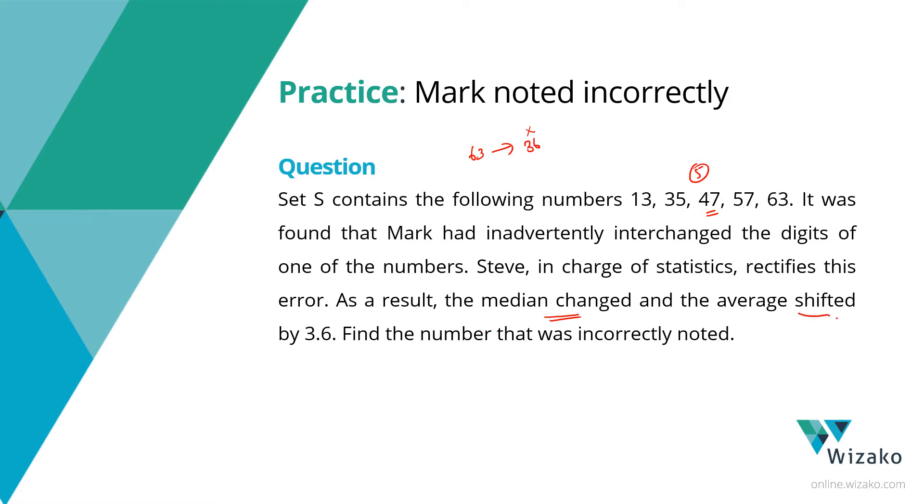The second thing, the average shifted by 3.6. Note this word, it's shifted. The question is not saying the average increased. The question is not saying the average decreased. It's just leaving both possibilities open. For example, the number noted down incorrectly is 63. Then he would have noted it down as 36, which means that he is writing a number which is lesser than what should have been written. So the average would have gone down.